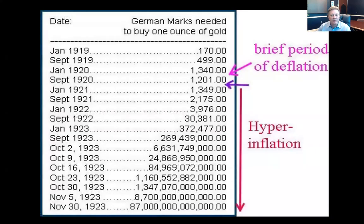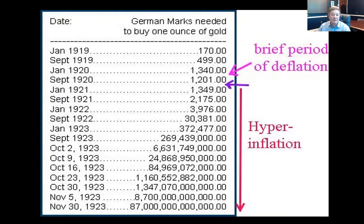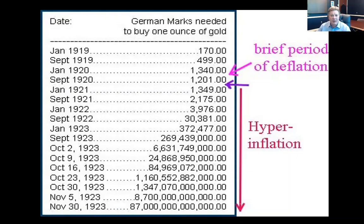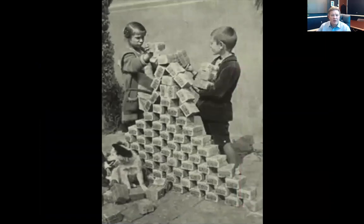Looking at gold, the price started at 170 marks per ounce, more than doubled, then doubled again. There was a brief period of deflation — probably when people felt like hoarding gold or started selling it — but it didn't last. Hyperinflation took over and eventually the mark became worthless. People were buying bread in the morning because by the afternoon it would cost three times as much.